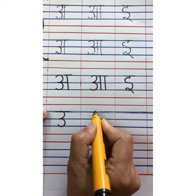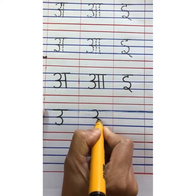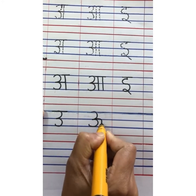After chota U comes bada U. Write bada U.